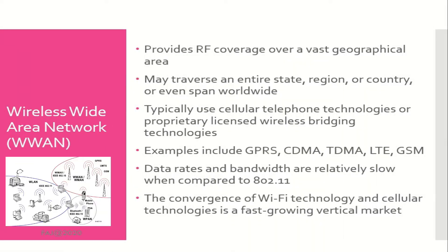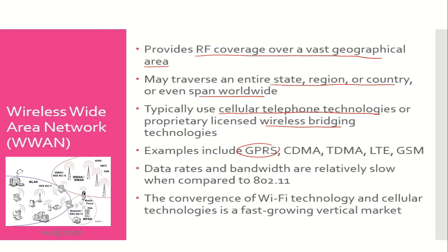Wireless Wide Area Network provides RF coverage over vast geographical areas. It may traverse an entire state, region or country, or even span worldwide. Typically uses cellular telephone technologies or proprietary licensed wireless bridging technologies. Examples include General Packet Radio Service, Code Division Multiple Access, Time Division Multiple Access, Long Term Evolution, and Global System for Mobile.